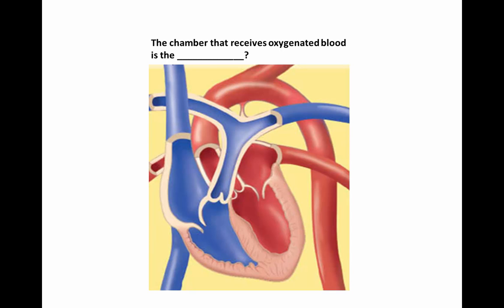Let's try to answer this question: the chamber that receives oxygenated blood is which? When breaking down circulatory routes, ask yourself two questions. First, what type of blood? The question says oxygenated — so that must be the left side. Second, what type of chamber? It says receiving — that's an atrium. So the chamber that receives oxygenated blood must be the left atrium.